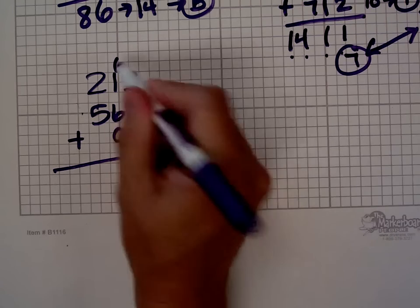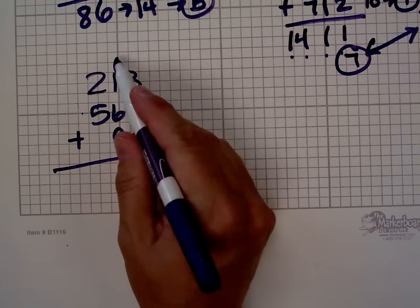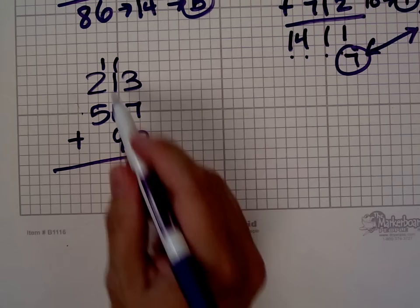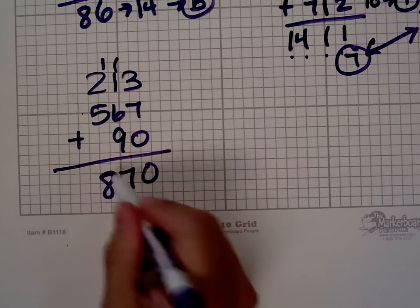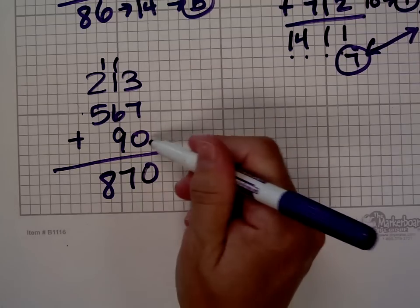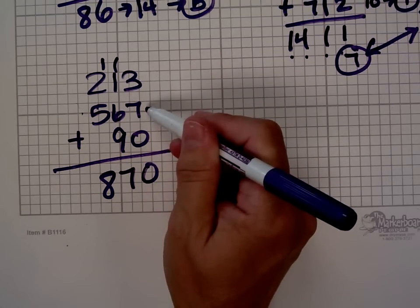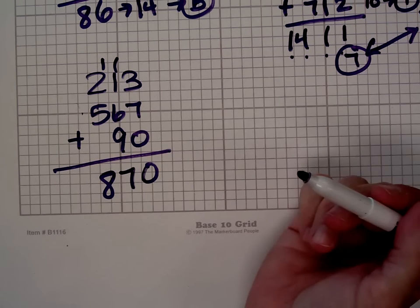7 plus 3 is 10. 9, 10, 11. 11 and 6 is 17. 1, 3, 8. So 870. Does that make sense? That's about 100. That's about 200, which is about 300. And that's really closer to 600. So I expect my answer to be close to 900, and it is.